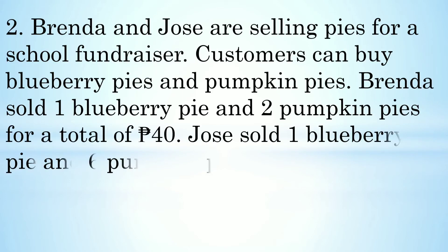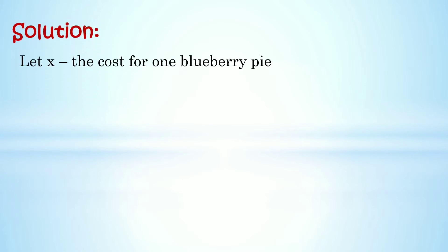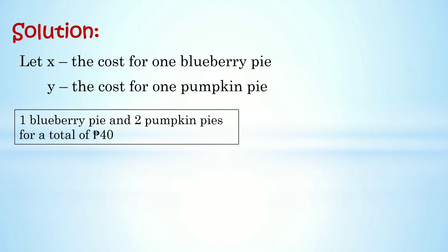Number 2: Brenda and Jose are selling pies for a school fundraiser. Customers can buy blueberry pies and pumpkin pies. Brenda sold one blueberry pie and two pumpkin pies for a total of 40 pesos. Jose sold one blueberry pie and six pumpkin pies for a total of 96 pesos. What is the cost of one blueberry pie and one pumpkin pie? Sa ating problem, kailangan natin hanapin kung magkano ang halaga ng bawat pie. Let x be the cost for one blueberry pie and y be the cost for one pumpkin pie.